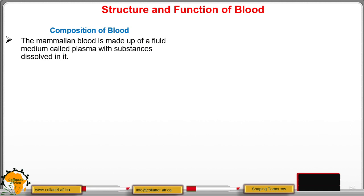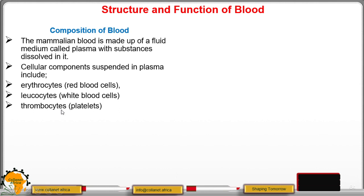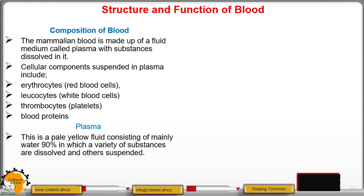Plasma has substances dissolved in it. The cellular components suspended in plasma include erythrocytes (red blood cells), leukocytes (white blood cells), and thrombocytes (platelets). Plasma itself is a pale yellow fluid consisting of mainly 90 percent water, in which a variety of substances are dissolved and others suspended.